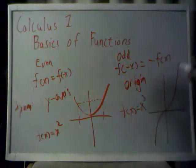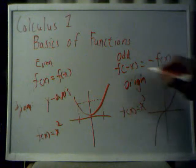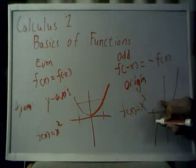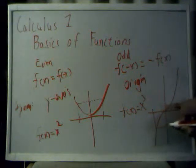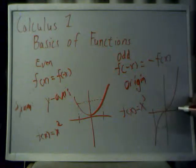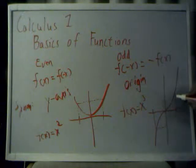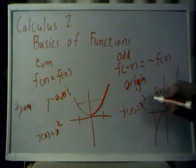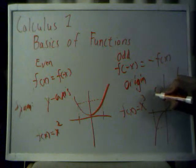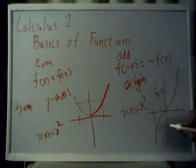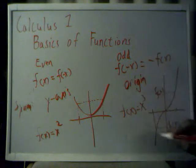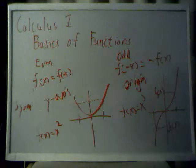For an odd function, f of negative x — you go down to here. And then for f of x, you go up to here, and you intersect the y-axis. But for this point, f of x is equal to — if you multiply this by negative 1 — you'll get this point right here. So this is why f of negative x is equal to negative f of x for an odd function.